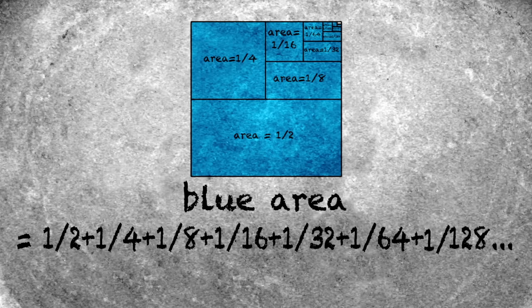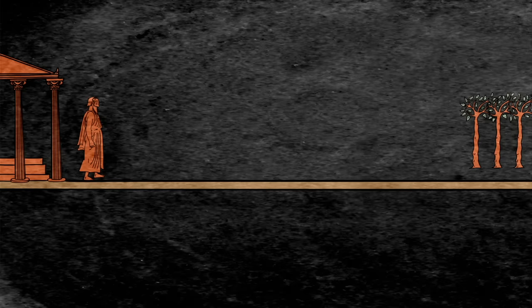the entire square becomes covered with blue. But the area of the square is just one unit, and so the infinite sum must equal one.